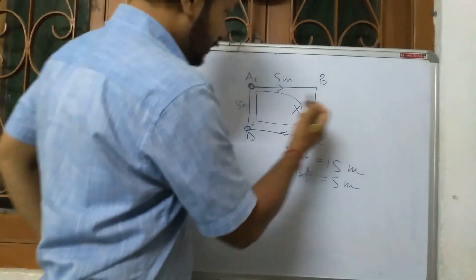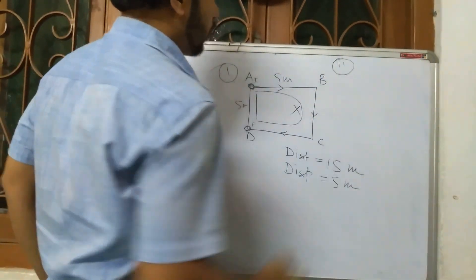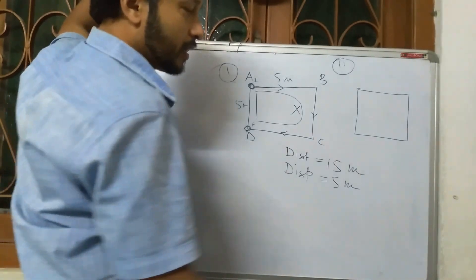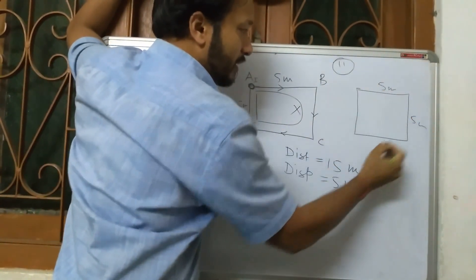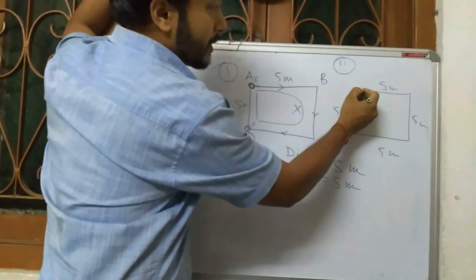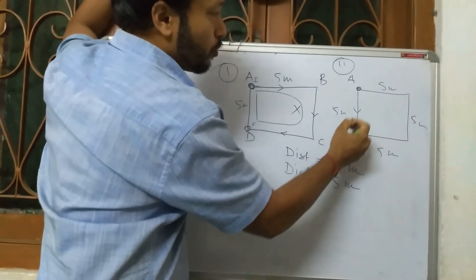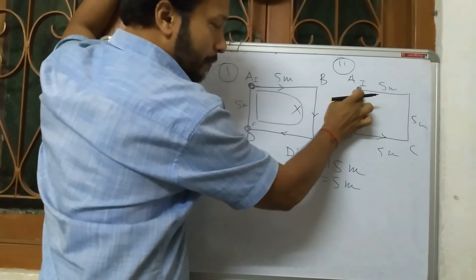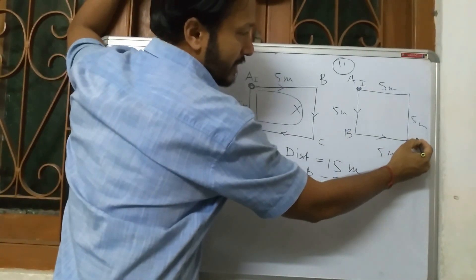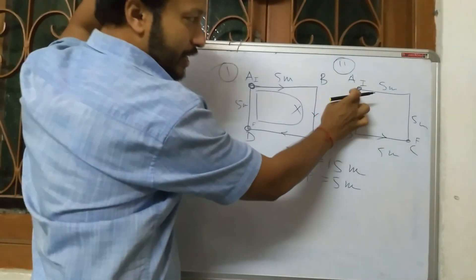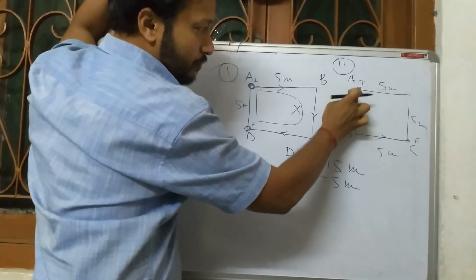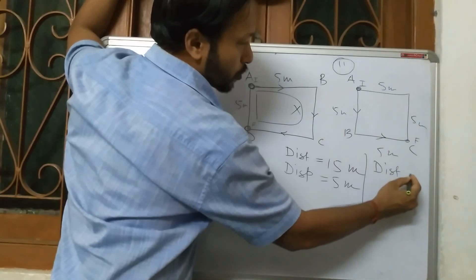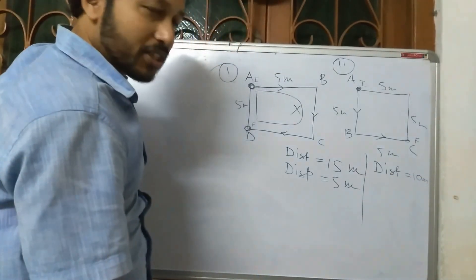Another example — example number 2. Here also we are considering a square, with sides of 5 meters each. The person is at A, goes from A to B, then from B to C. Initially he was at A, finally he is at C. So distance is 5 plus 5, that is 10 meters.